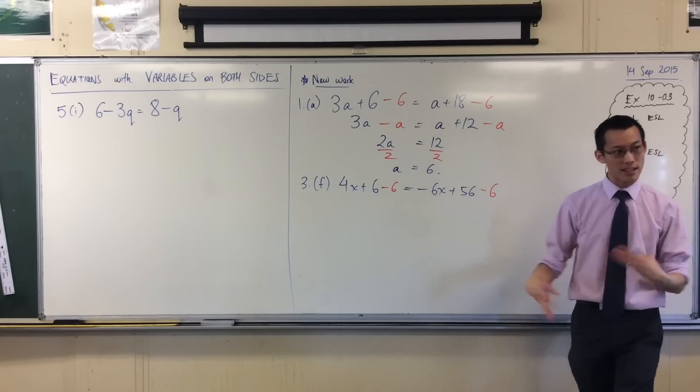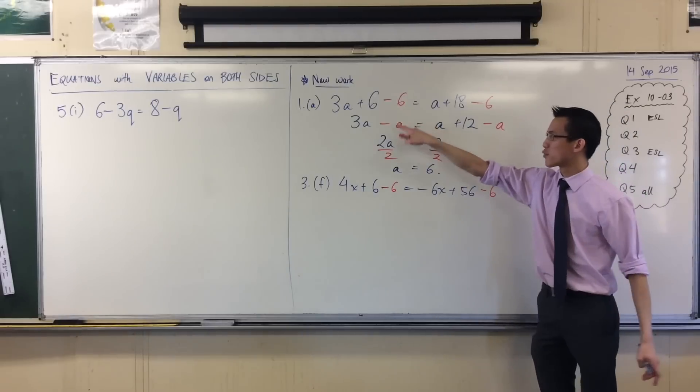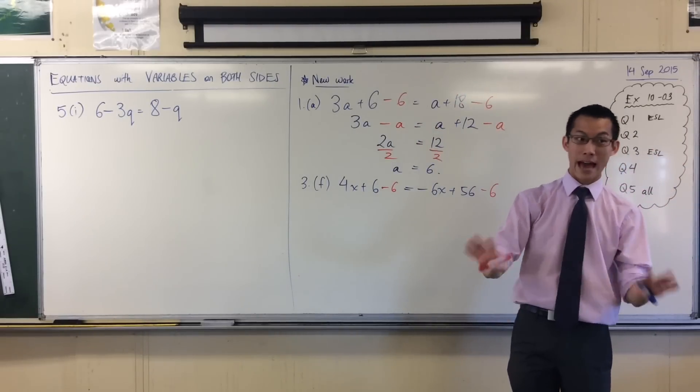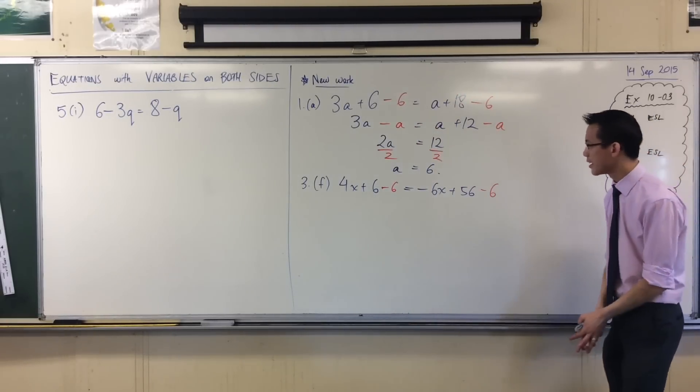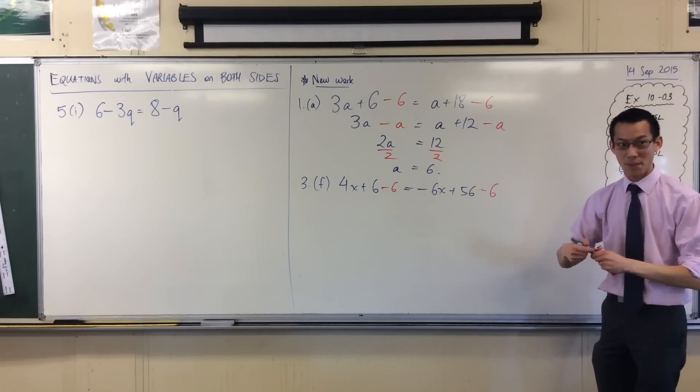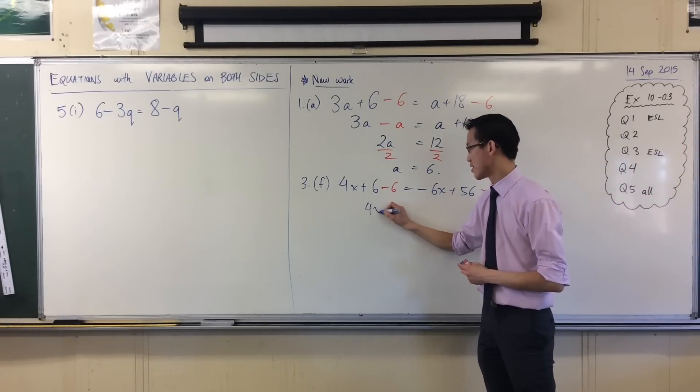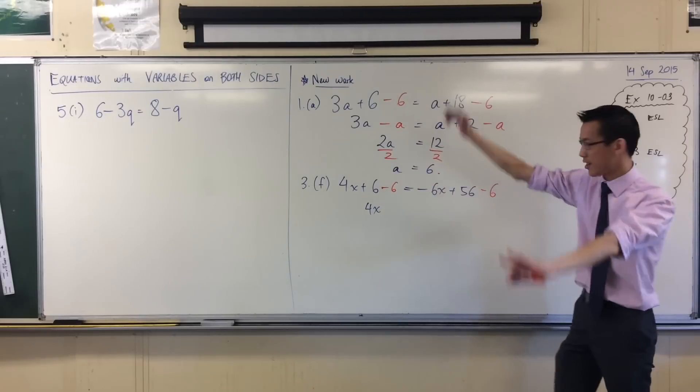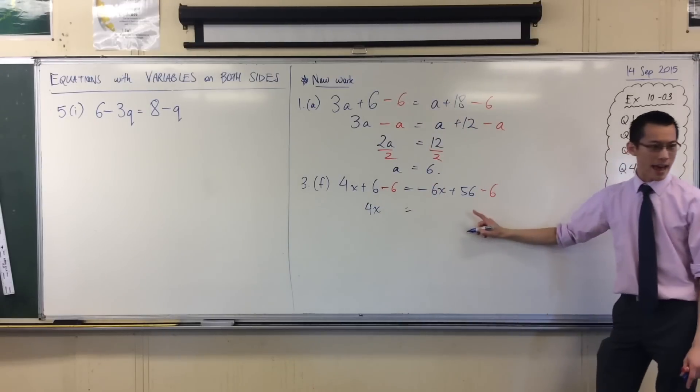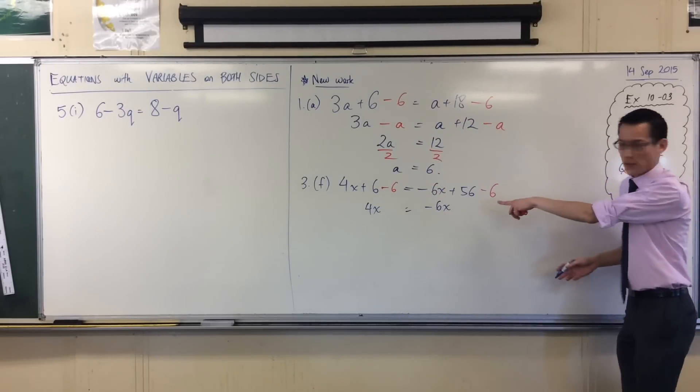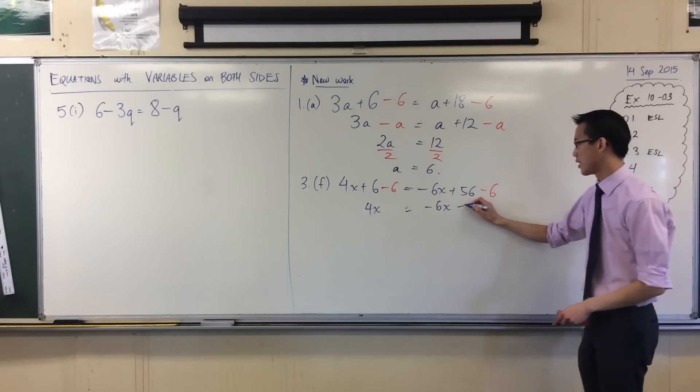As you start to get more confident, you don't necessarily have to write this extra step in, but I want to really make sure that we know what we're doing. On the left-hand side, the 6s, the plus and the minus, they eliminate each other. And then on the right-hand side, this minus 6x is still just hanging out there. What happens over here? Plus 50. Very good.